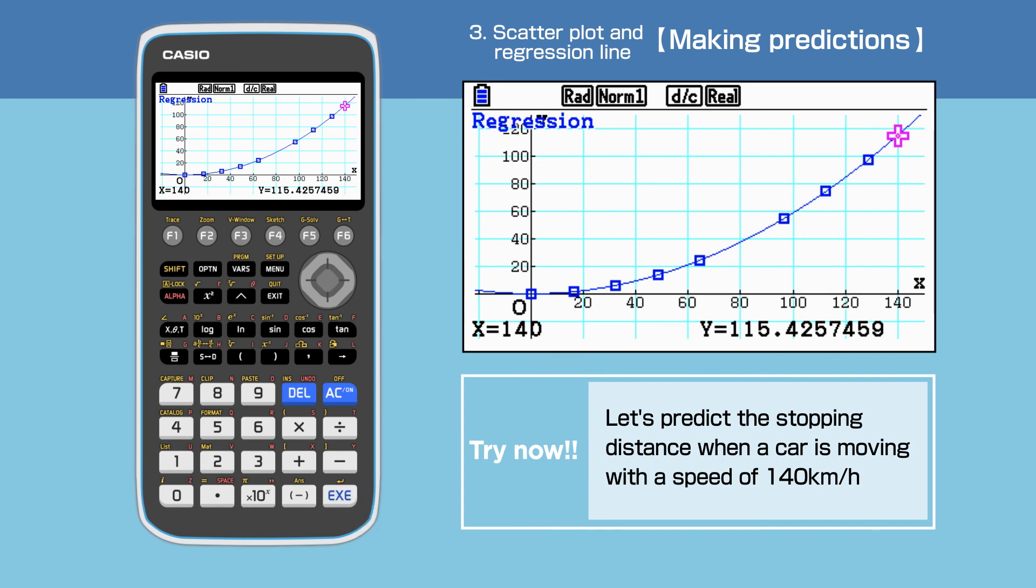Press Execute. The prediction of the stopping distance is 115 meters when a car is moving with a speed of 140 kilometers per hour.